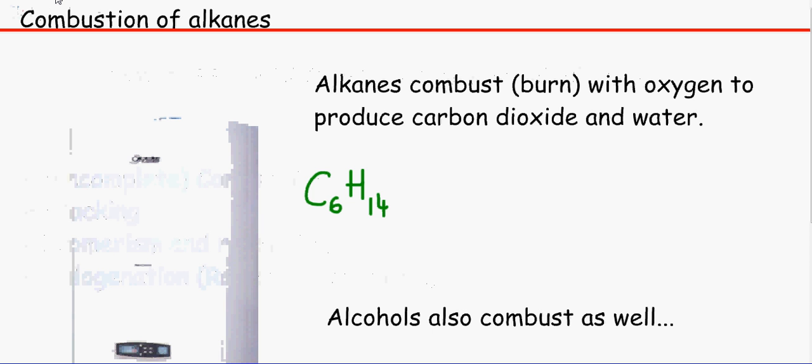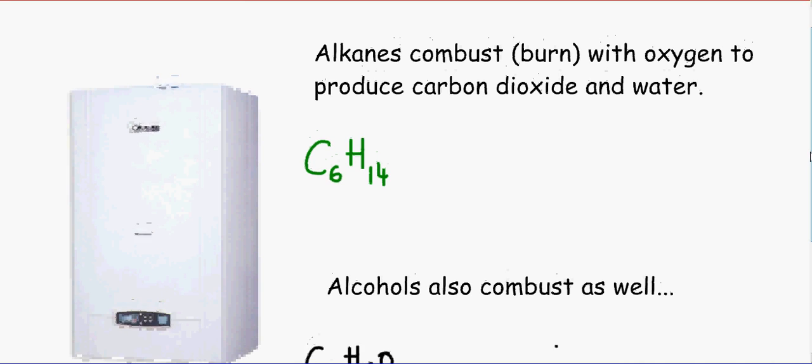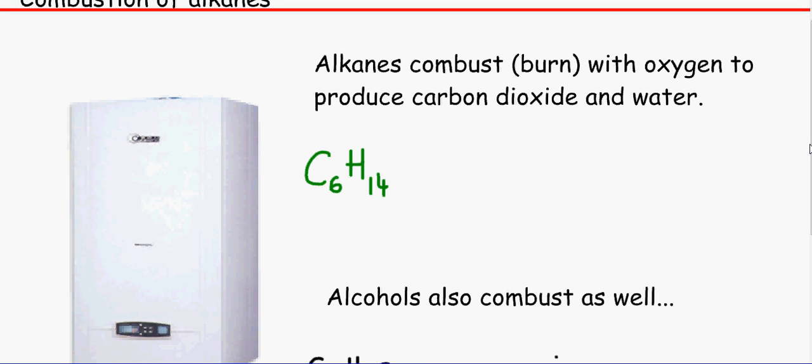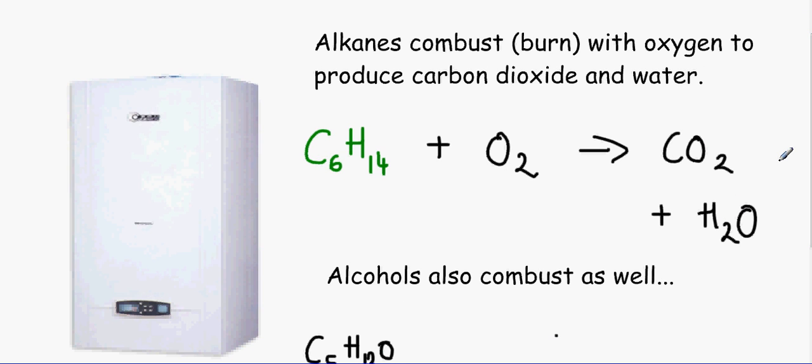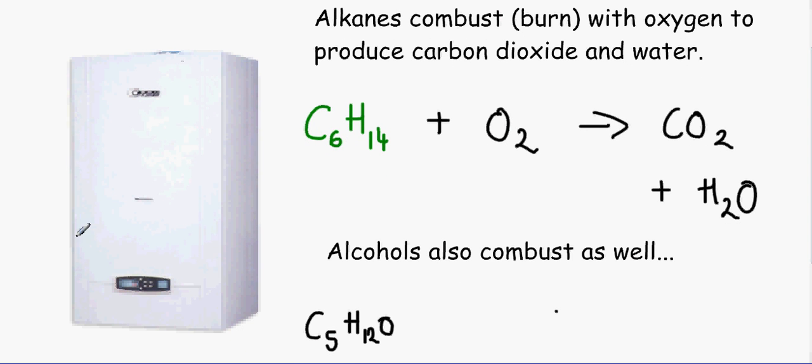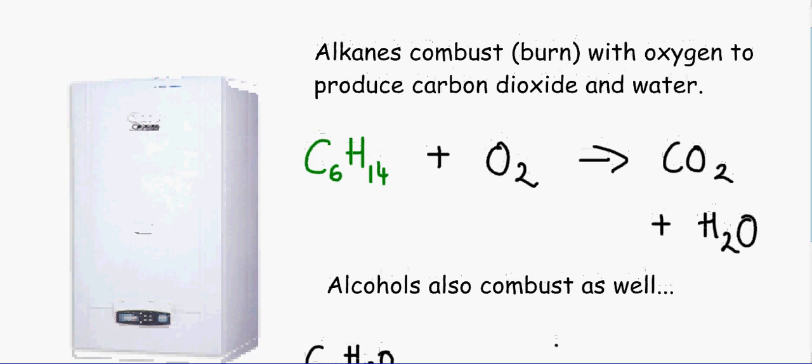The first thing that alkanes usually go through that we can use is combustion, and that means we just burn it. Combustion just means burn. We can burn it with oxygen to produce carbon dioxide, water, and energy. We don't need to write energy because that's six letters. We use it in boilers and in cars as well.